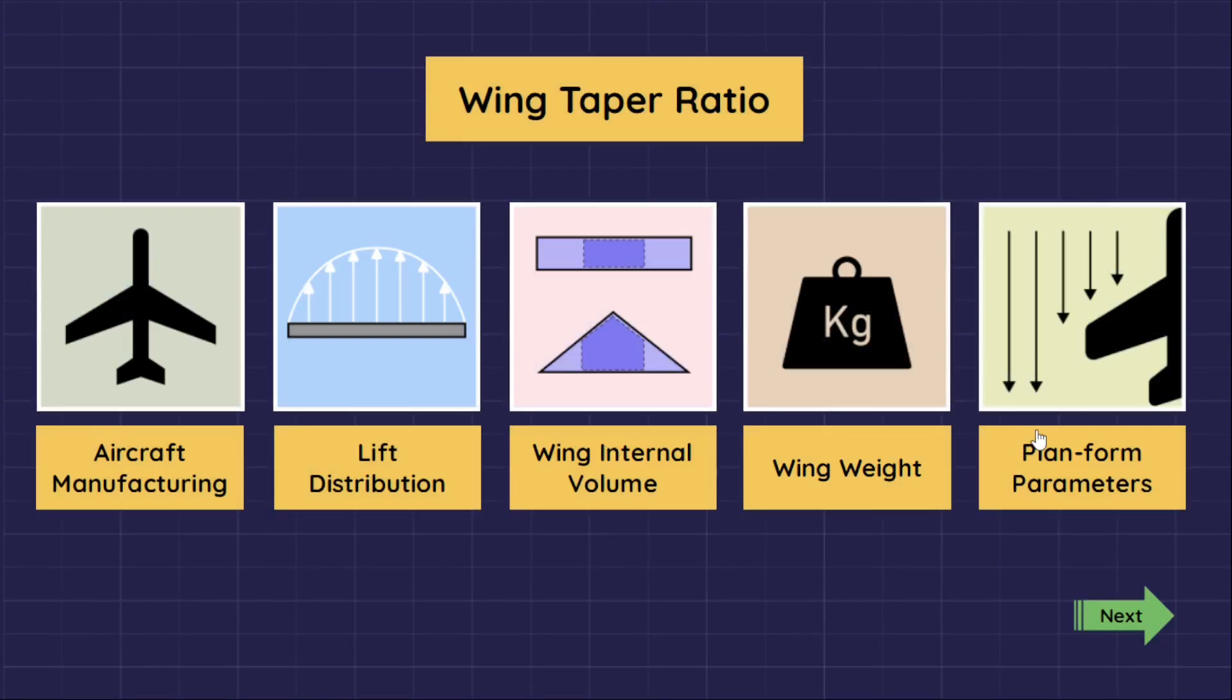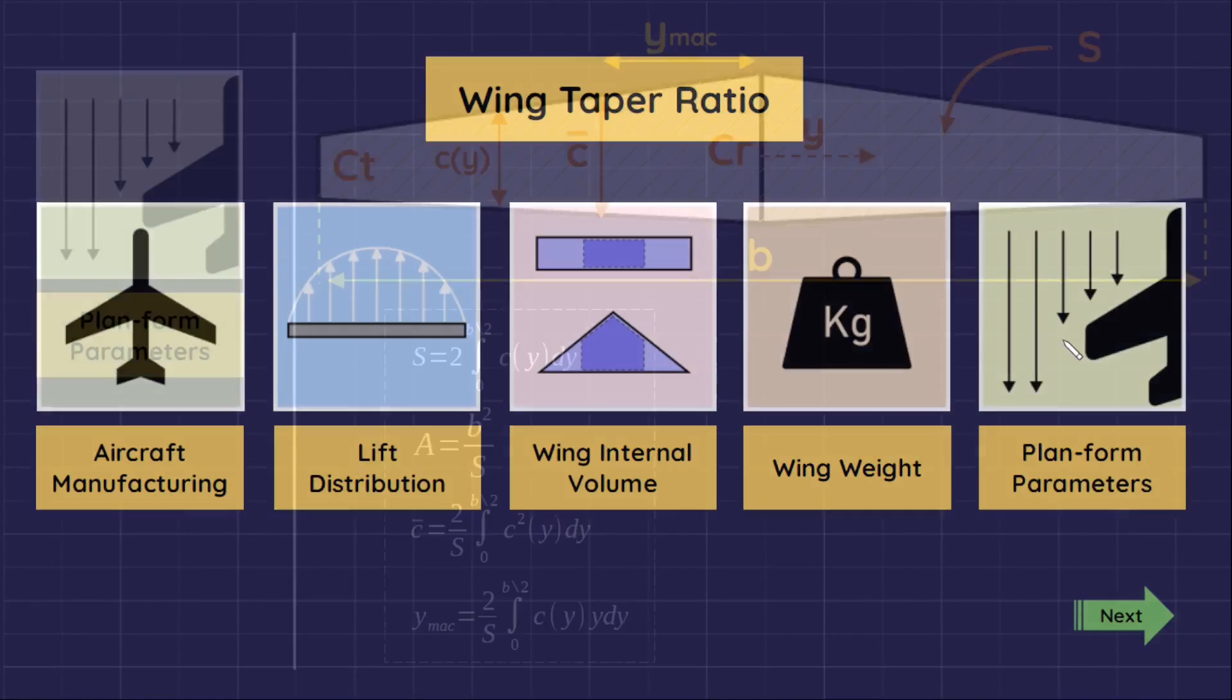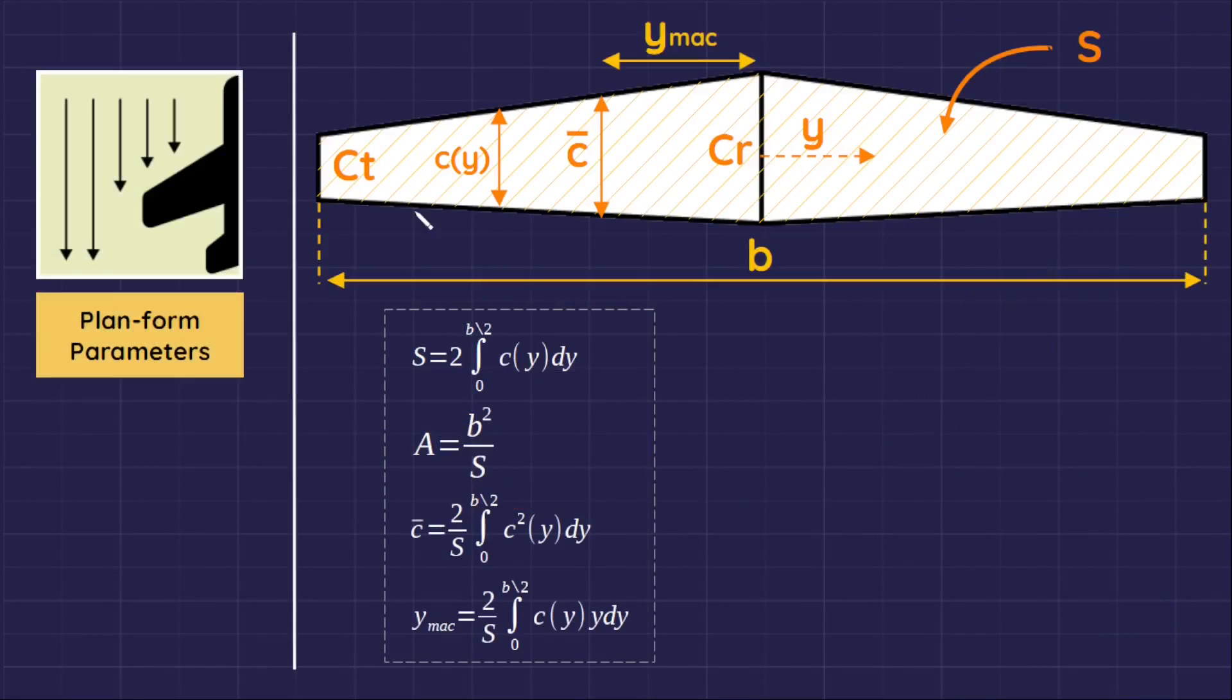Effect of taper ratio on the calculation of wing planform parameters. General planform parameters that are useful in estimating aerodynamic data are the planform area S, aspect ratio A, main aerodynamic cord C, and the span-wise location of the main aerodynamic cord YMAC. These parameters are given by the following expressions, where CY is the local cord, Y is the span-wise coordinate, B is the wing span.